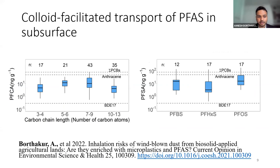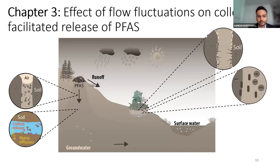Not only in water, but even in air — dust particles in the air can also contain PFAS. Even though PFAS is non-volatile, tiny dust particles can absorb PFAS and transport it through the air for inhalation, which is an exposure pathway not previously considered. I saw that this colloid concentration of PFAS is very comparable to other organic compounds in different studies. This shows that colloid-facilitated transport of PFAS is a big concern not only in surface water but also in air. That's why I decided to concentrate on this colloid-facilitated transport of PFAS in the subsurface.